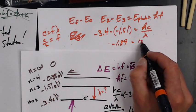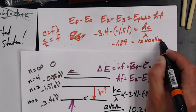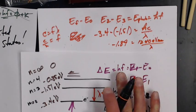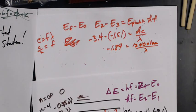hc is 1240 electron volt nanometers divided by lambda. So now let's keep going here.